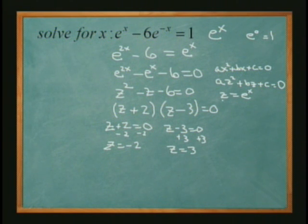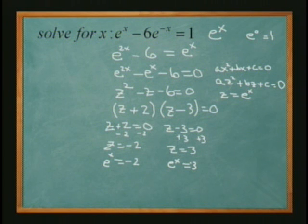So we said z equals e to the x. So we're really saying that e to the x equals negative 2. And over here e to the x equals 3. So now we need to solve for x to actually get the right value.